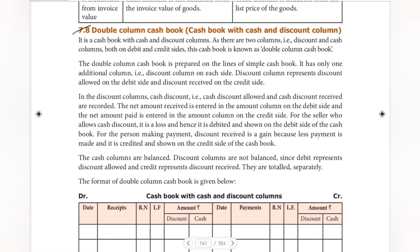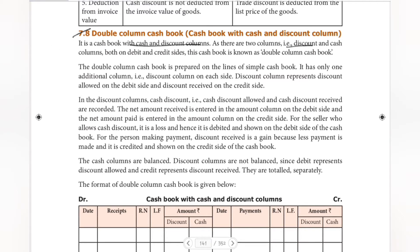This is a cashbook with cash and discount columns. A single-column cashbook has one cash column. This cashbook has an additional discount column. As there are two columns — that is, discount and cash columns — both on the debit and credit side. It has only one additional column, that is the discount column on each side.